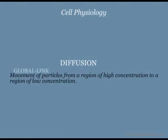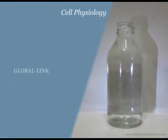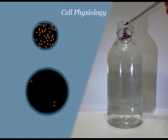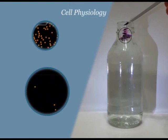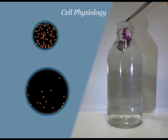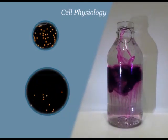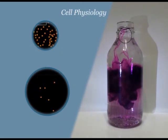Diffusion is the process by which particles move from a region of high concentration to a region of low concentration. Imagine if a spatula of potassium permanganate is added to water. This region is said to be concentrated with potassium permanganate crystals, while the rest of the water has a low concentration of the same particles. The difference in concentration between the two regions is called the concentration gradient. Accordingly, the potassium permanganate particles will diffuse to regions of low concentration continuously until all the water has a uniform concentration of potassium permanganate crystals.